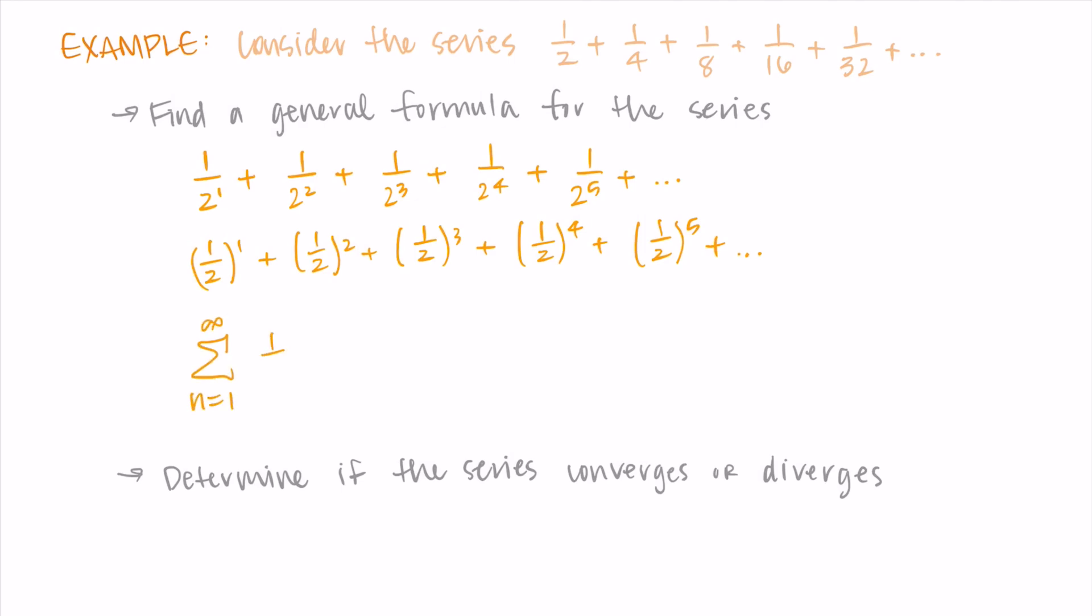So I can write this as a sum from n=1 to infinity of (1/2)ⁿ. So n=1 would give us the 1/2, n=2 would give us 1/4, n=3 would give us 1/8, etc., and the sum tells us that we're adding them all together.